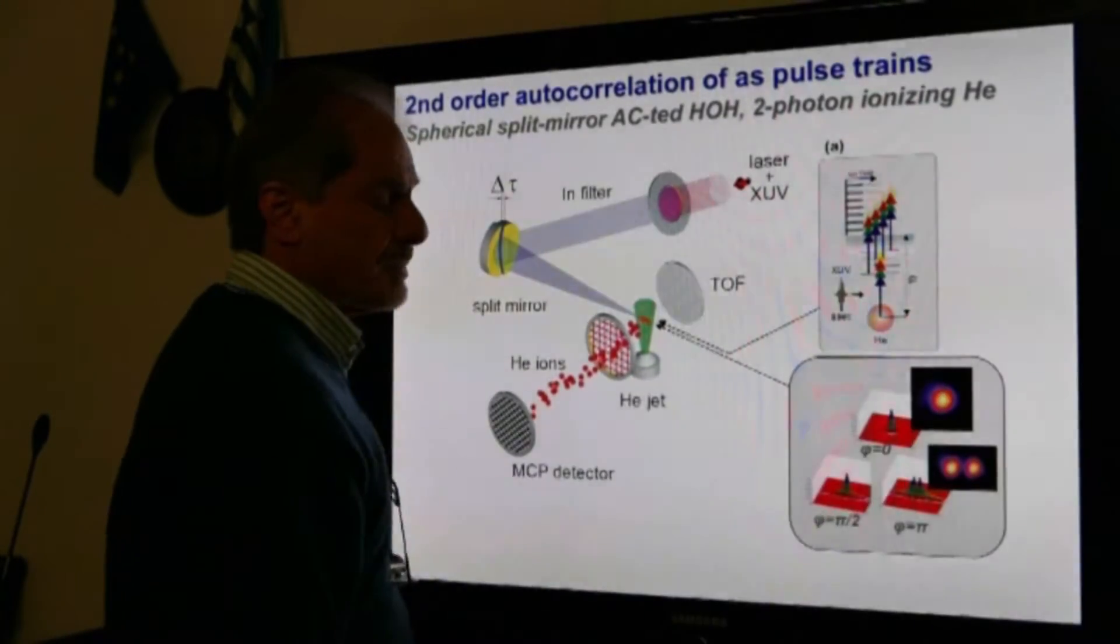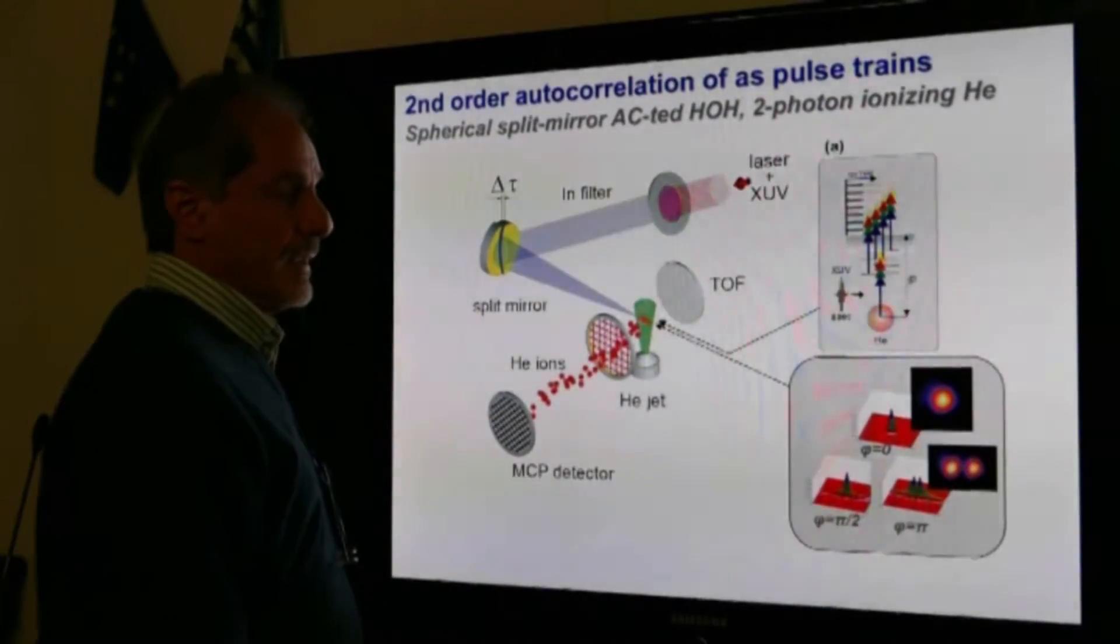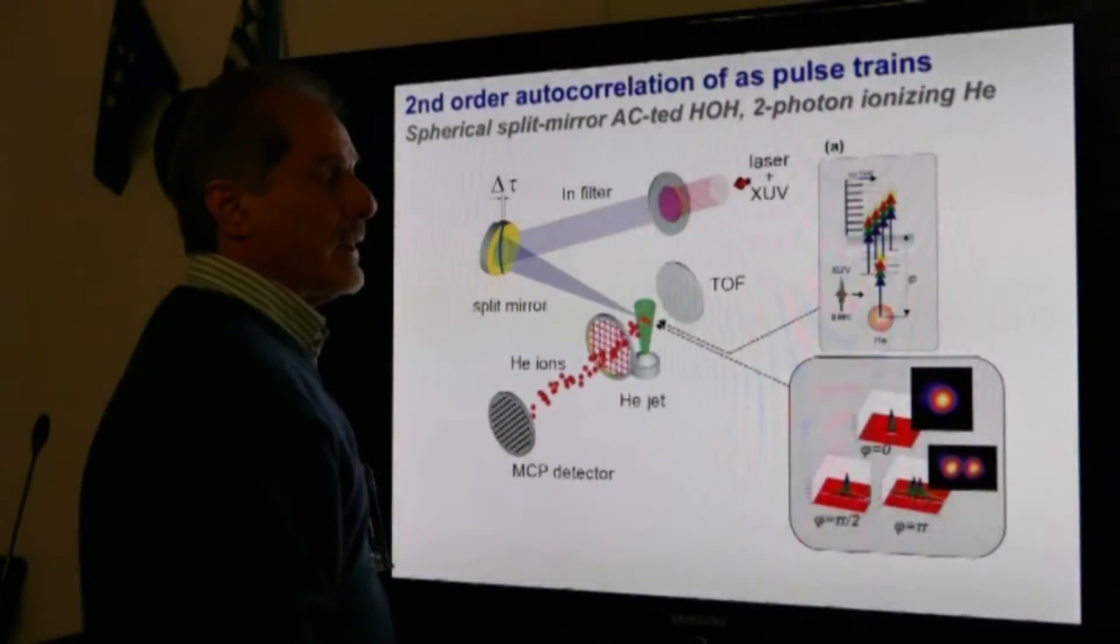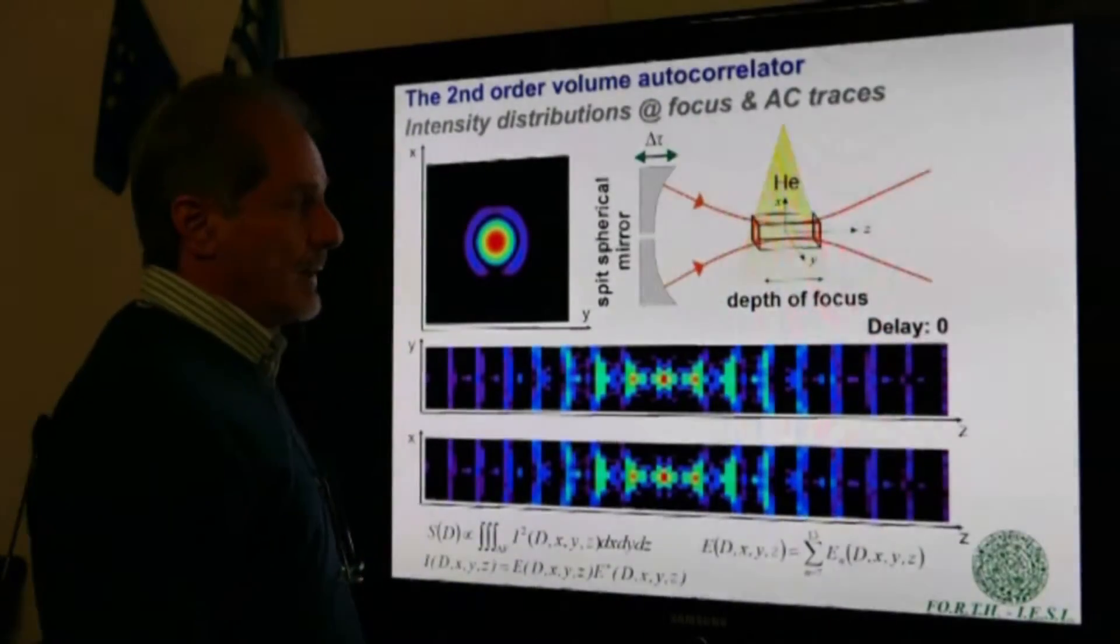Here we have an Airy spot and here we have a redistribution of the intensity into two parts. In the actual experiment where the harmonics are used, this picture becomes more complicated.